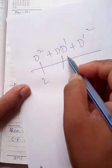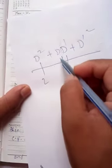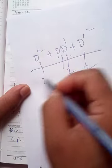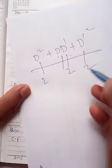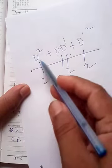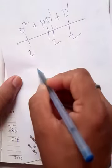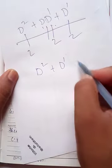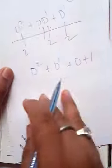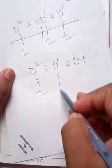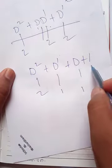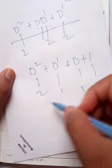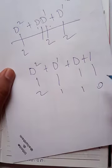To distinguish homogeneous from non-homogeneous: if every term has the same degree — for example, degree 2 throughout — it is homogeneous. But if terms have different degrees, such as D² (degree 2), D (degree 1), and a constant term (degree 0), then it is non-homogeneous. For example, D² + D + D + 1 has terms of degree 2, 1, 1, and 0.